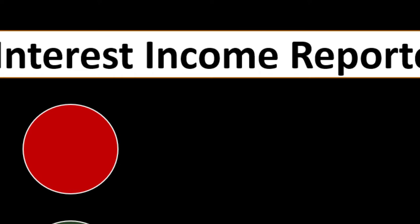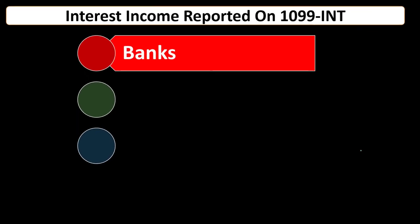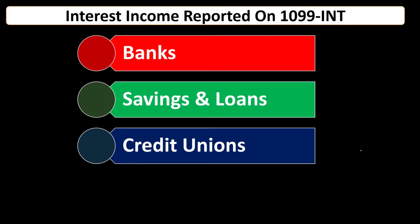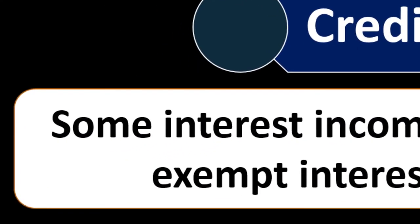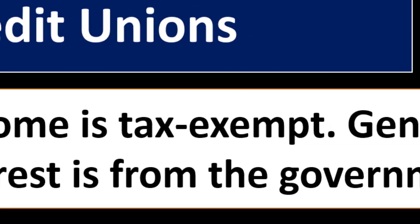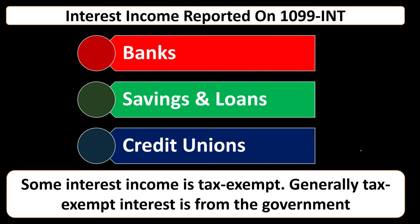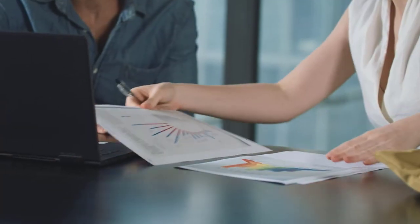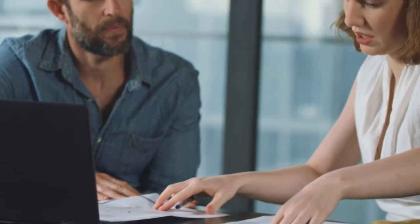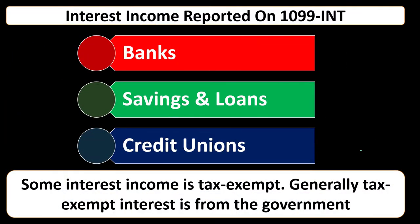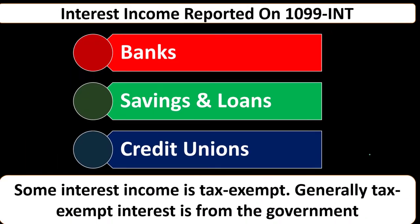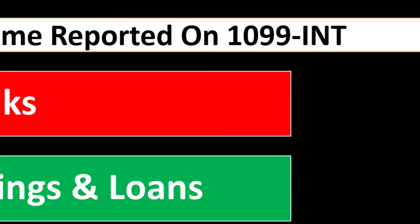Interest income is typically something you'll receive from financial institutions like banks, savings and loans, and credit unions. The government has leverage over those institutions to report the income to the recipient. So we, as recipients of the interest, receive income from the financial institution, and the bank then needs to report that interest to us generally with Form 1099.